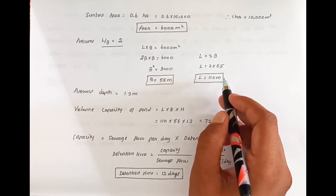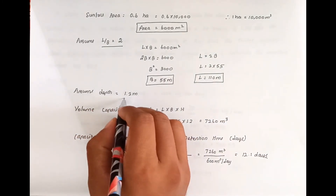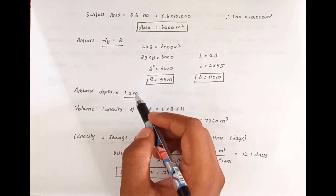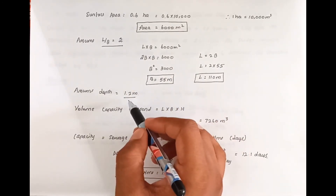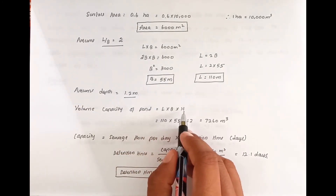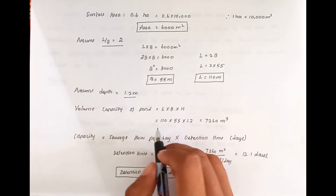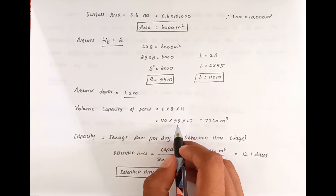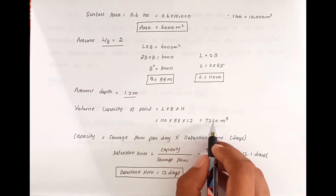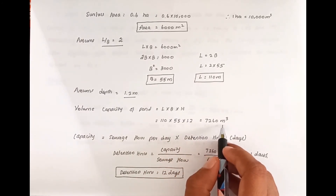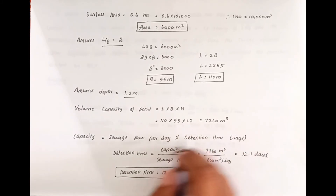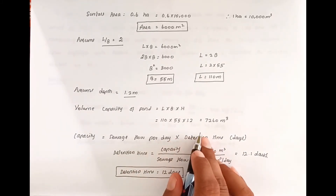Next, we find the volume capacity. We assume a depth of 1.2 m. Volume equals length × breadth × depth, which is 110 × 55 × 1.2, giving a volume of 7260 m³.